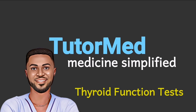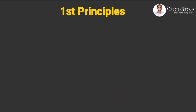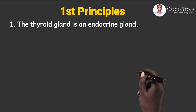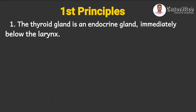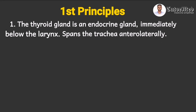Alright friends, grab your notepads and let's begin. As usual, let's begin with the first principles. The thyroid gland is an endocrine gland situated immediately below the larynx, and it spans the trachea anterolaterally.